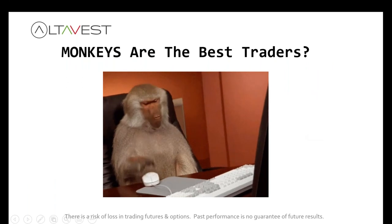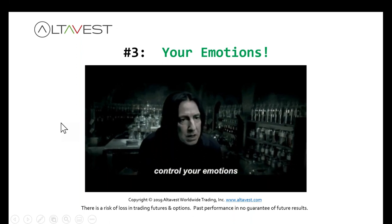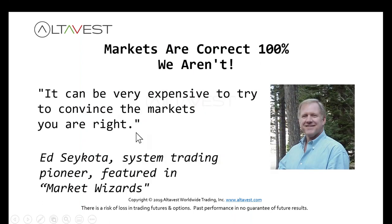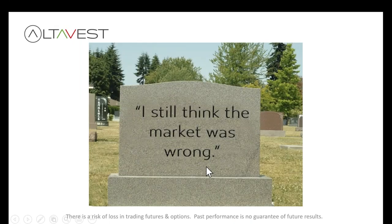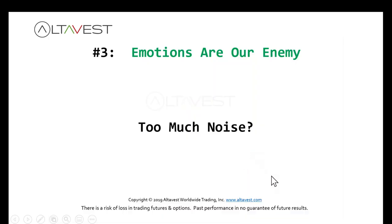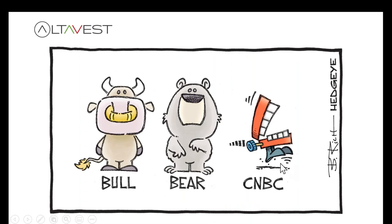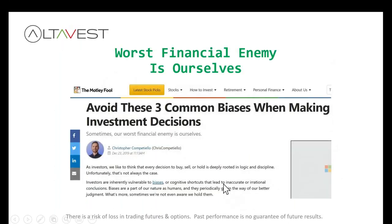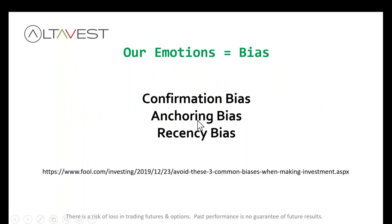Probably the most common hurdle: emotions. It can be expensive trying to convince the markets that you are right — that's from Ed Sequoia, featured in the book Market Wizards. You don't want to argue with the prices. You want to stay off the emotional roller coaster — euphoric when making money, despondent when losing. You should be dispassionate about this. There's a lot of noise: bulls, bears, pundits. Our worst financial enemy, I think, is us. We have a tendency toward confirmation bias, anchoring, and recency bias.